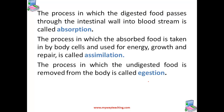Absorption is the process in which digested food passes through the intestinal walls — that is, the two intestines in human beings — into the bloodstream. Assimilation is the process in which the absorbed food is taken in by the body cells and used for energy, growth, and repair.